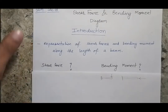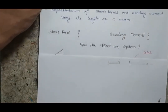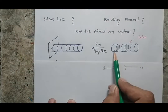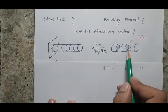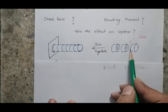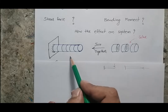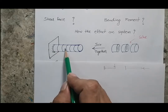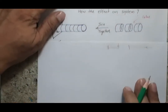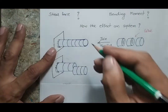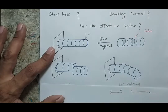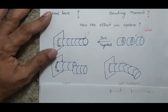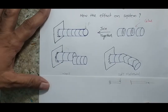To understand shear force and bending moment, let's start with a simple example. Suppose I have cylindrical pieces joined together using glue, and with a number of pieces I am making a beam. The beam consists of different cylindrical members — 1, 2, 3, 4, 5, 6, for example. Now if I apply a transverse load F to this member, what do you expect will happen?